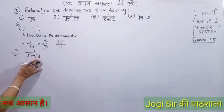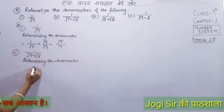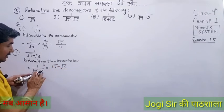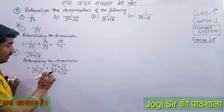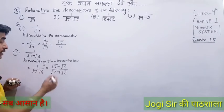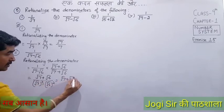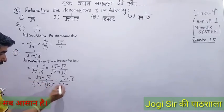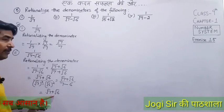Second part: 1/(√7 − √6). There is a minus sign here. For rationalization, change the sign — if minus, make it plus; if plus, make it minus. Multiply and divide by (√7 + √6). Using identity (a−b)(a+b) = a²−b²: numerator becomes √7 + √6, denominator becomes 7 − 6 = 1. So the answer is √7 + √6. The denominator is now rational.